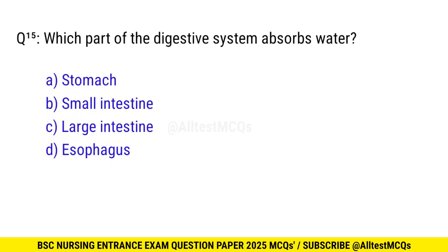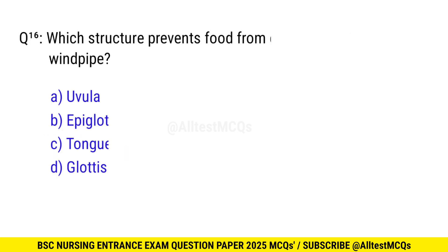Question No. 15: Which part of the digestive system absorbs water? The right option is C: Large intestine. Question No. 16: Which structure prevents food from entering the windpipe? The right option is B: Epiglottis.